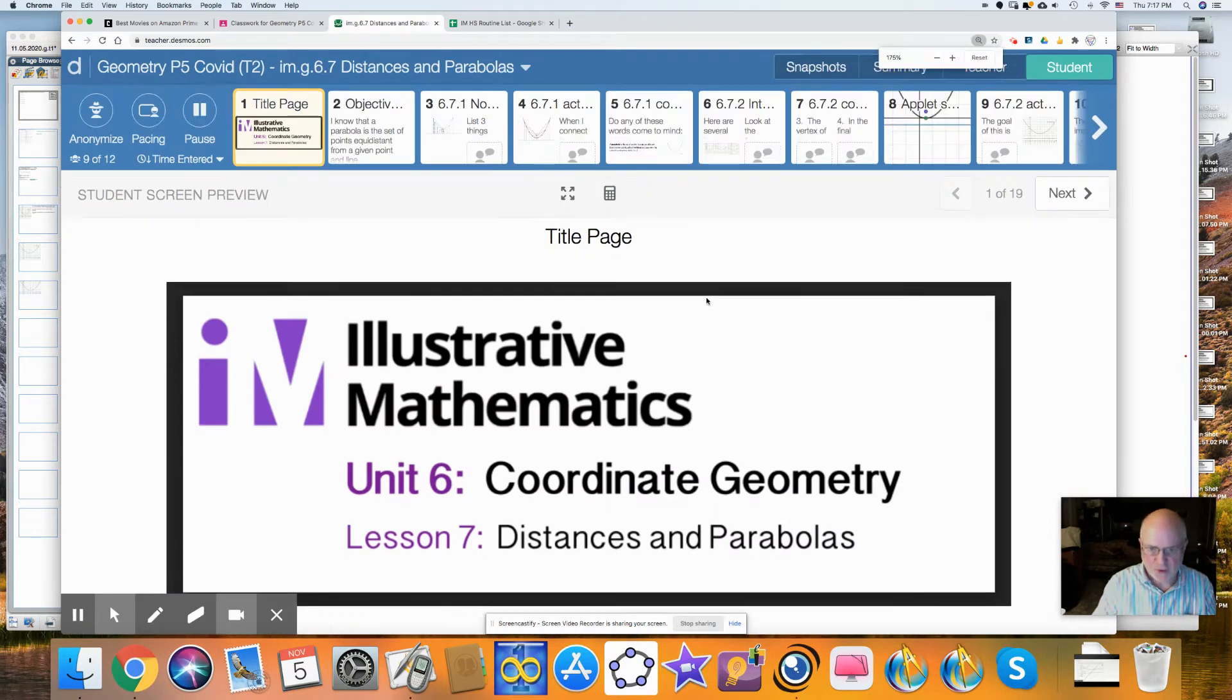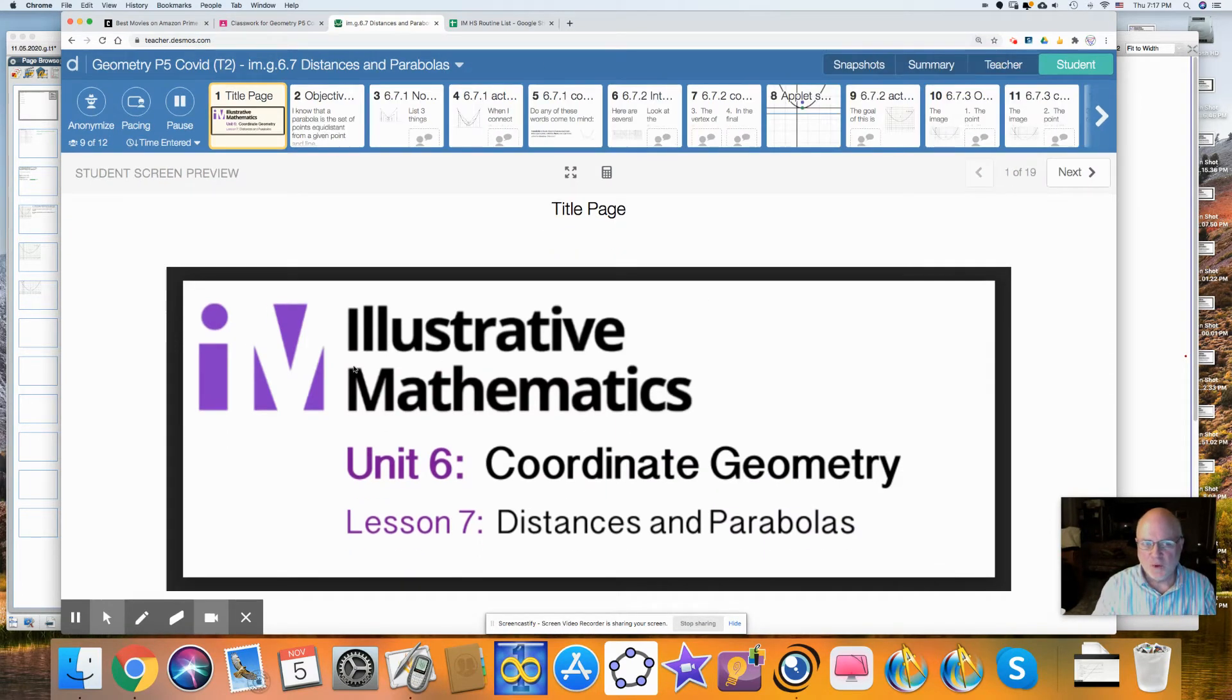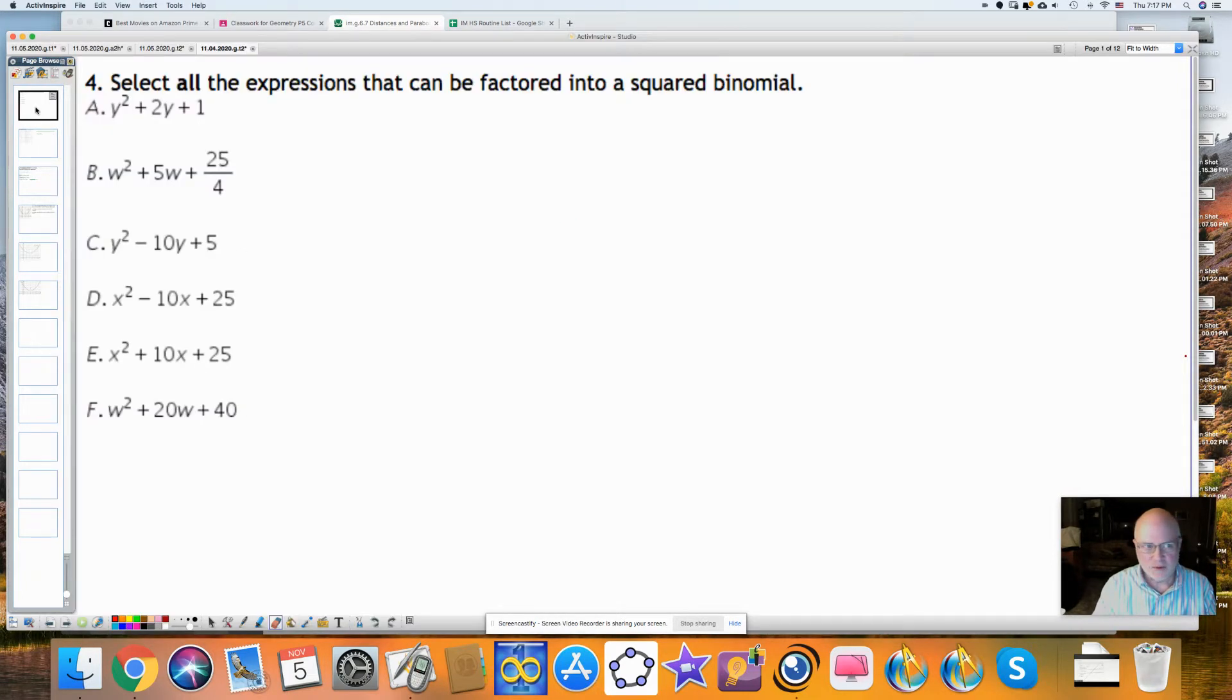Before we get going, I'd like to go over some homework from the previous night. We'll start with this one. It says to select all expressions that can be factored into a squared binomial. That is, which of these are perfect square trinomials?